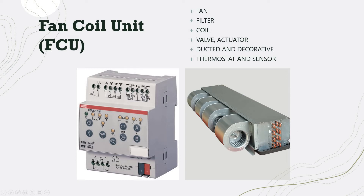The duct includes both supply air and return air ducts. This type of FCU can be controlled in KNX in two ways: using a KNX FCU actuator with connections for fan speed one, two, and three, and controlling the cooling valve as a modulated type. In some applications like hospitality, they use zero-to-ten volt control, where you use a different actuator with a zero-to-ten volt output for the cooling valve. A KNX thermostat is also required.